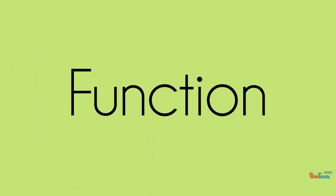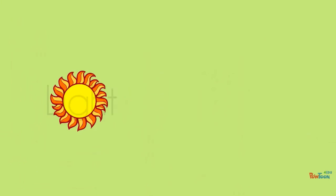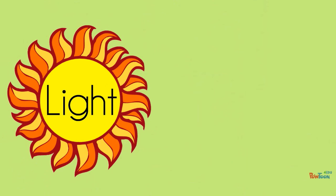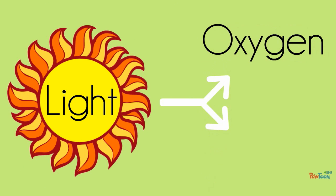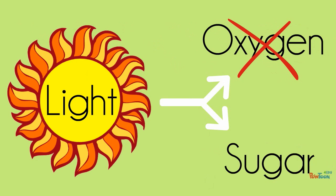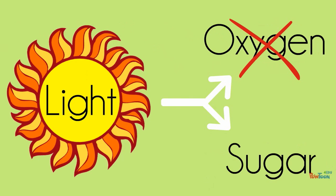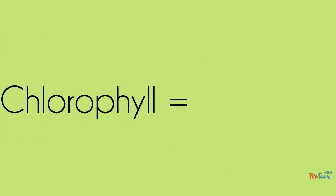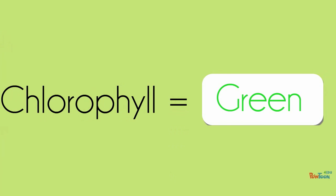Now let's talk about the functions of the chloroplast. Chloroplast converts light into oxygen and sugar — this is called photosynthesis. The plant does not need oxygen, so it gets rid of it, and this is how we get oxygen. Chlorophyll is also a pigment in chloroplast that makes plants look green.